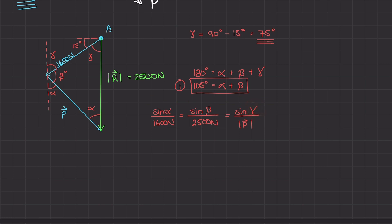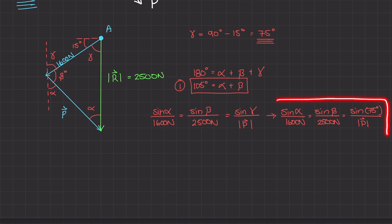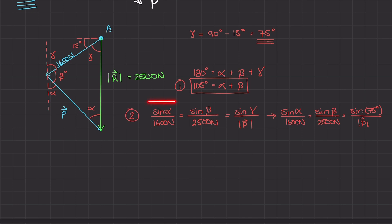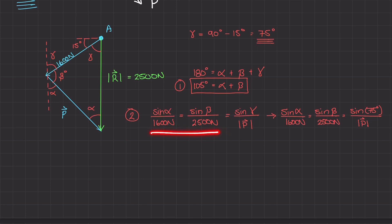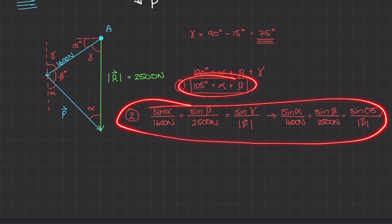We already know gamma is 75 degrees, so I'll rewrite the law of sines relationship with gamma as 75 degrees. I'll call this entire relationship Equation 2. This relationship contains multiple sub-equations — you can pair any two terms. Now comes the creative part: you need to determine which relationships to use to solve for alpha, beta, and P. Since Equation 1 has alpha and beta, and Equation 2 also has alpha and beta, I'll use those together and solve for beta first.